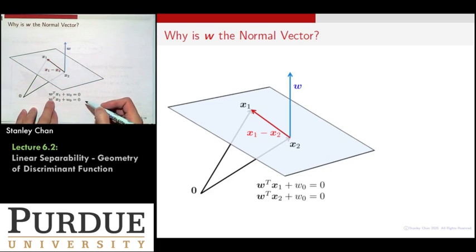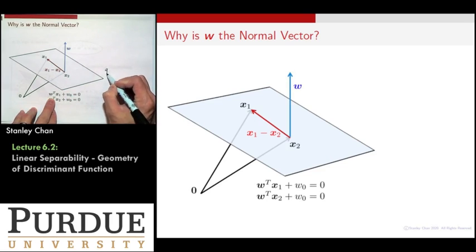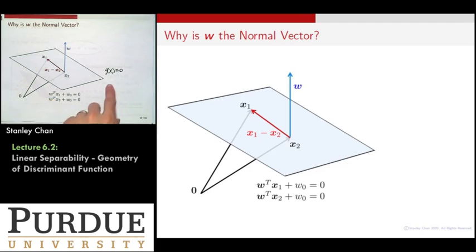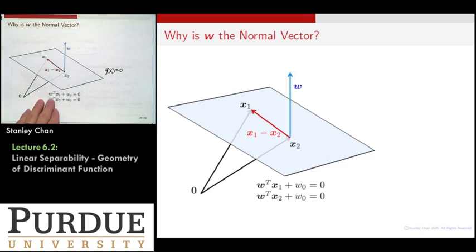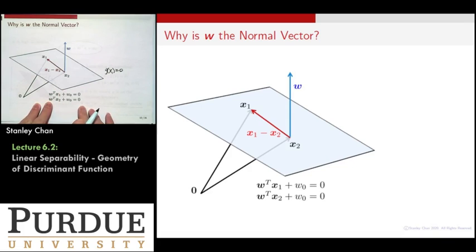We can write down two equations. Since x_1 is on the plane, it satisfies g(x_1) equals 0, giving us w transpose x_1 plus w_0 equals 0. Similarly, if you pick another point x_2 on the plane, you get the same equation. Now you have a pair of equations.